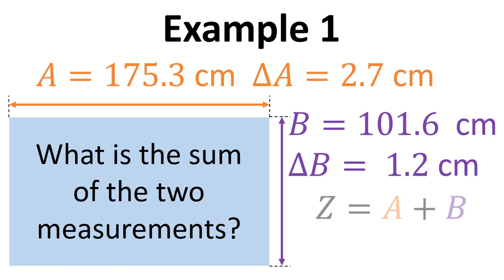So the first one is, what is the sum of these two measurements? So we're going to have the value Z as being the sum of these two, and it's simply A plus B. So that's fairly straightforward. But also we'd like to know, what is the uncertainty in Z? So what's delta Z?